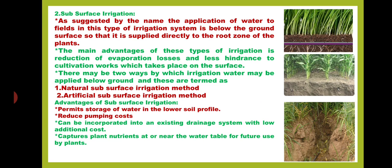There are two ways by which irrigation water may be applied below ground: number one, natural subsurface irrigation method, and second, artificial subsurface irrigation method. The natural subsurface irrigation method permits storage of water in the lower soil profile, reduces pumping costs, can be incorporated into an existing drainage system with low additional cost, and captures plant nutrients at or near the water table for future use by plants.